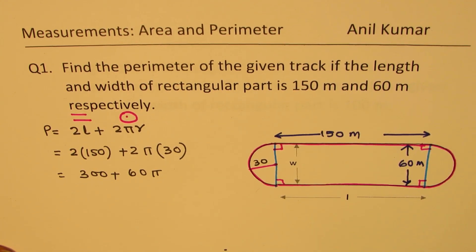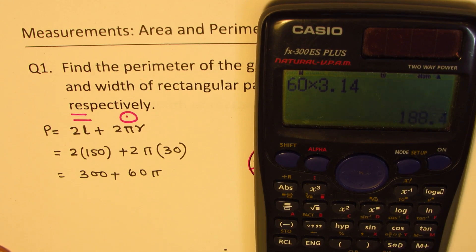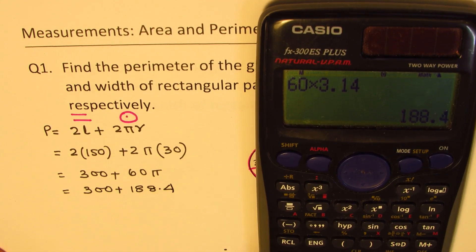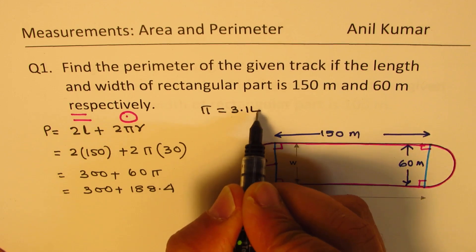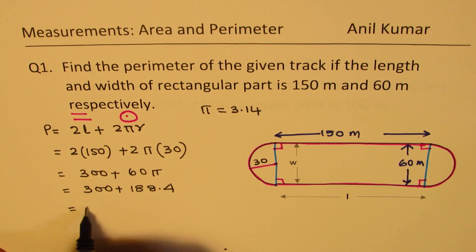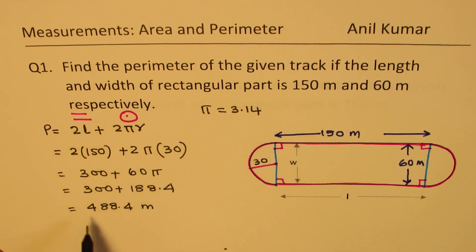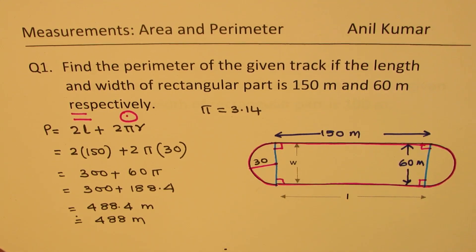To get the exact value we can use a calculator. So 60 times 3.14 gives 188.4, so we get 300 plus 188.4. If a calculator is not allowed, you can estimate with π equals 3.14 or say slightly more than 3. So we get 488.4 meters, and since all given dimensions were rounded to whole numbers, we round to approximately 488 meters.